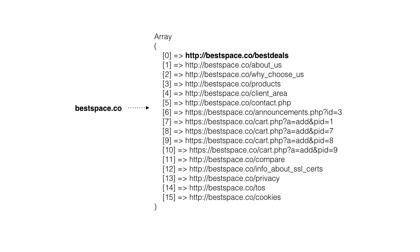It might be hard to understand because it can actually go on forever, since you're just following links. So I made a diagram to show you. Here we have input, which in this case is bestspace.co. When we get bestspace.co, it gives us an array — the list of all the links from the first page of the bestspace website, such as the deals page, about us, why choose us, products, and so on down to cookies.